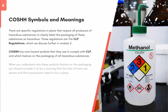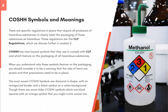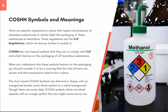COSHH symbols and meanings. There are specific regulations in place that require all producers of hazardous substances to clearly label the packaging of these substances as hazardous. Those regulations are the CLP regulations, which are discussed further in module 2. COSHH has nine hazard symbols used to comply with CLP, which feature on the packaging of all hazardous substances. When you understand why these symbols feature on the packaging, you should consider it a warning that the risks of harm are severe and that precautions need to be in place. The most recent COSHH symbols are diamond in shape with an orange or red border and a black symbol on a white background, though there are some older COSHH symbols which are black squares with an orange symbol.